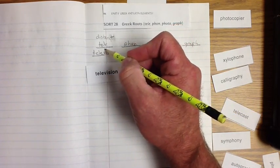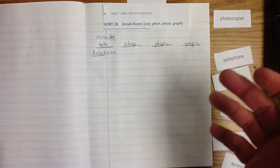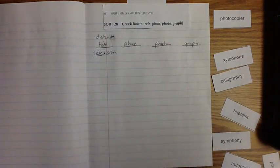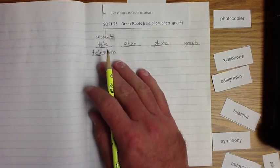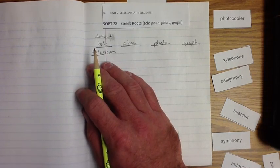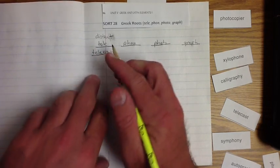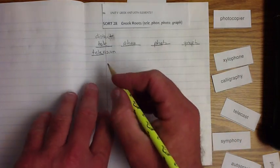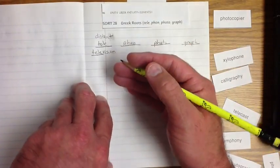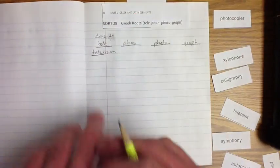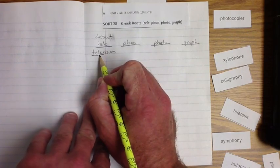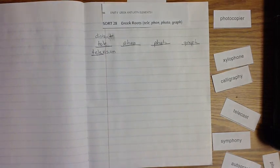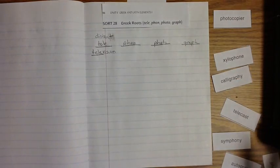Tele, vision from a distance. How does that work? Because when we're sitting in our living rooms watching our television, we're not very far from it, right? But where does that program come from? It comes from the satellite, or the cable, or an antenna from a distance, and comes into our living room. So it is vision from a distance. That's why we call it a television.